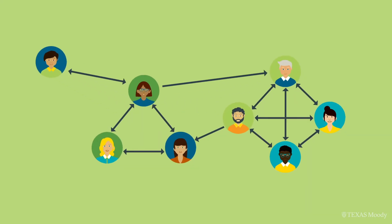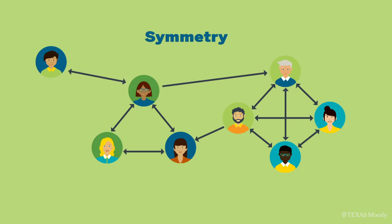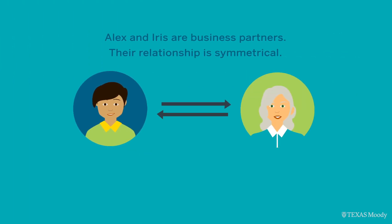We also have special terms to characterize the links between people. Strength is how strong the relationships are — for example, we could weight the lines based on how much they email each other. A relationship is symmetrical when it is reciprocated by default. Being someone's sibling is a symmetrical relationship. Likewise, Alex brought Iris in as a business partner, which is by definition a symmetrical relationship.